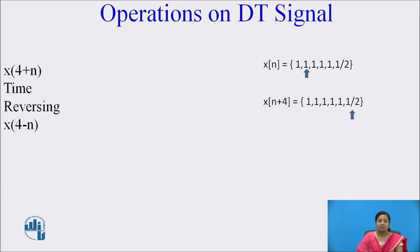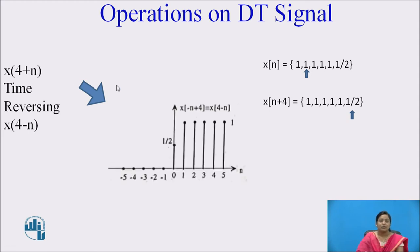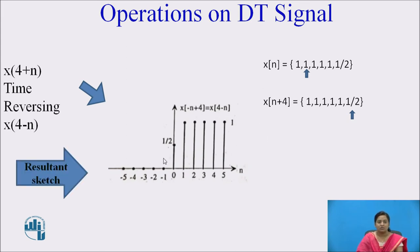Now let us see the second step. To obtain x(4 - n), we apply time reversing on x(4 + n) — that is, fold the signal about the n = 0 axis. We get x(4 - n). This is the resultant sketch. The signal x(4 - n), which is x(-n + 4), is represented in sequential form, with the origin at the half position.